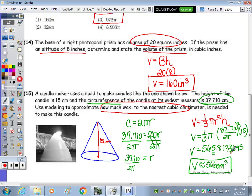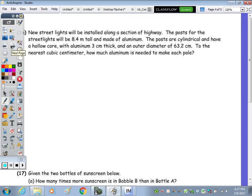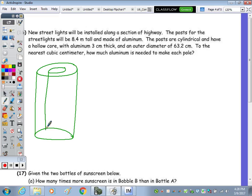Okay, number 16: new streetlights will be installed along a section of highway. The posts for the streetlights will be 8.4 meters tall and made of aluminum. The posts are cylindrical and have a hollow core. So let's draw that. Here's the cylinder, the hollow core, so another cylinder inside.